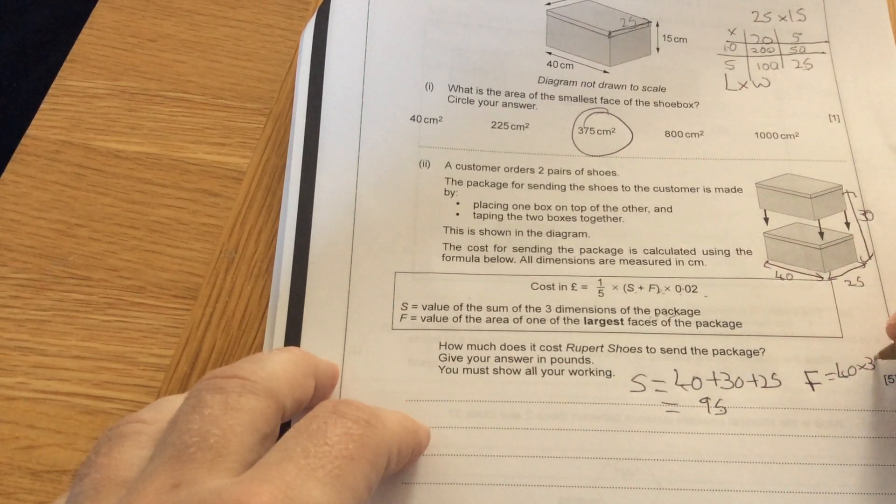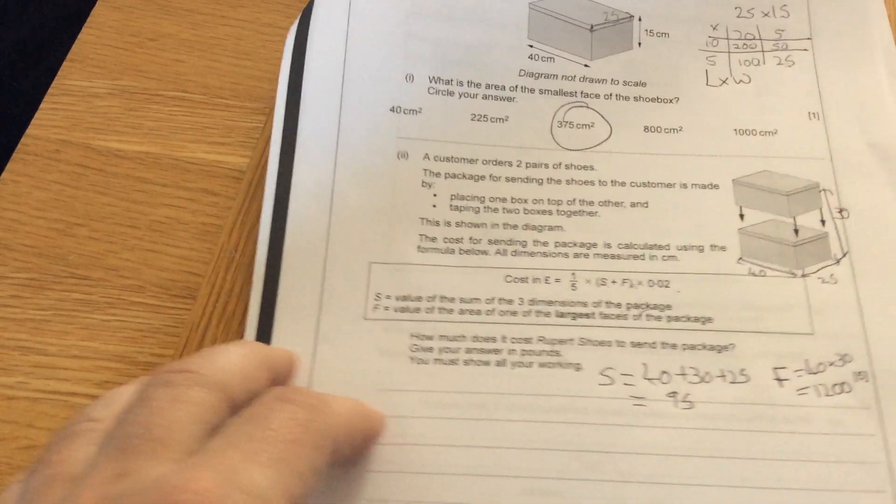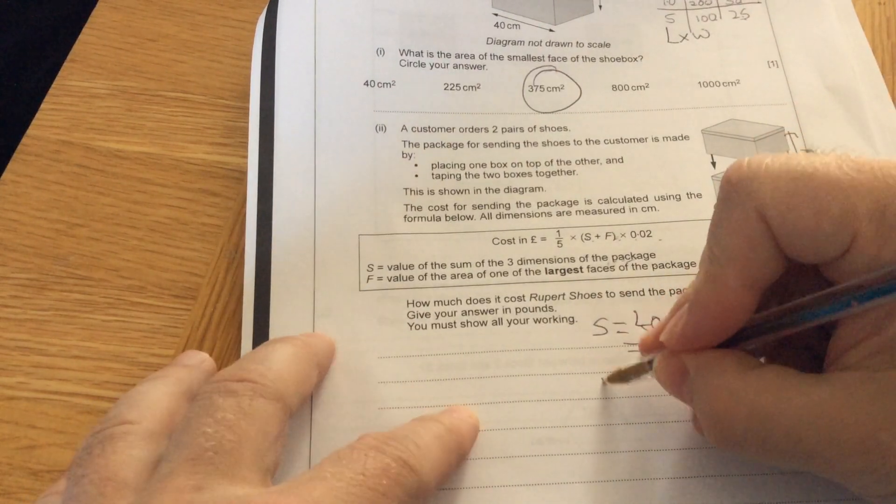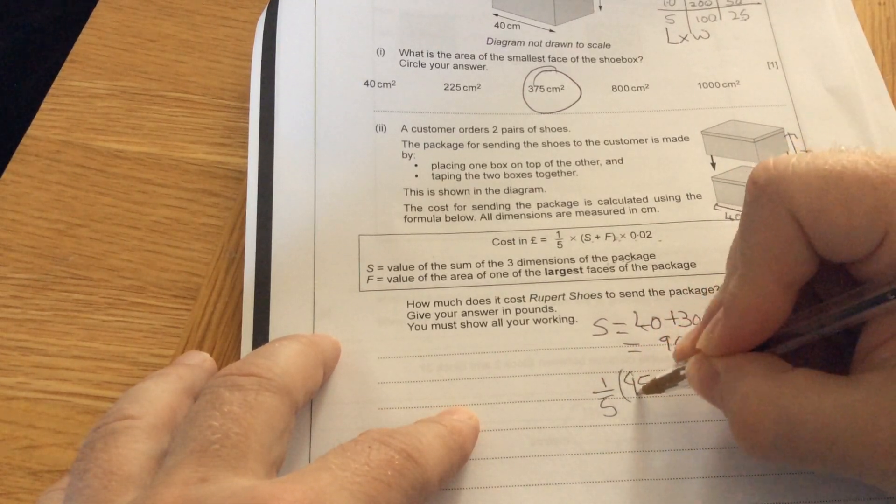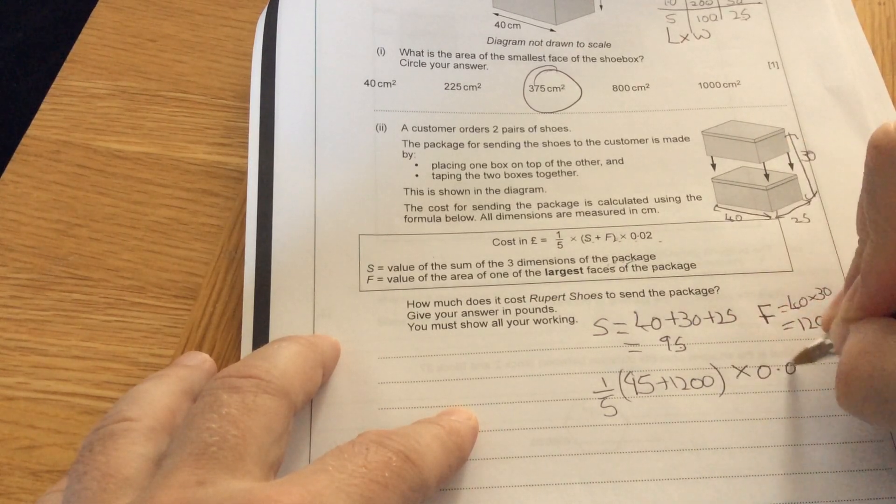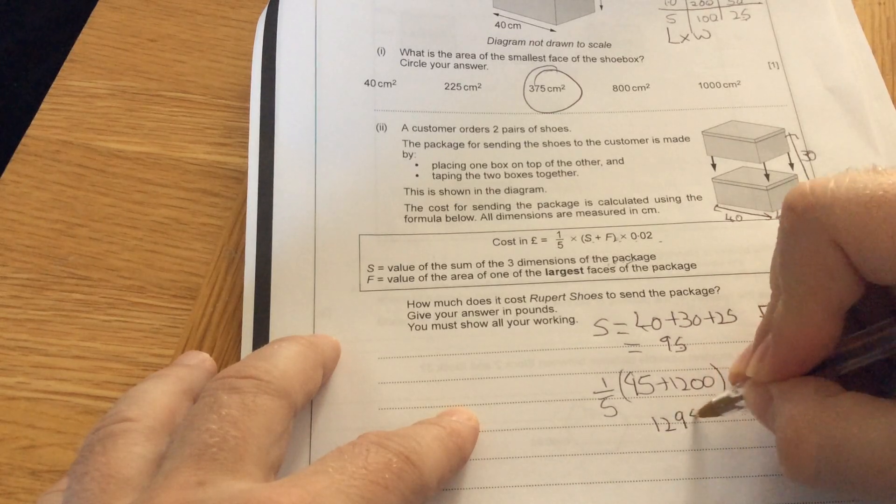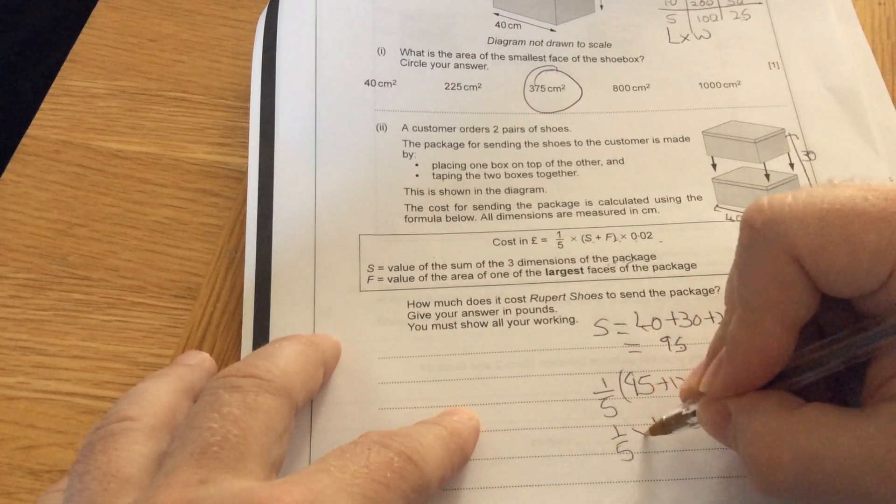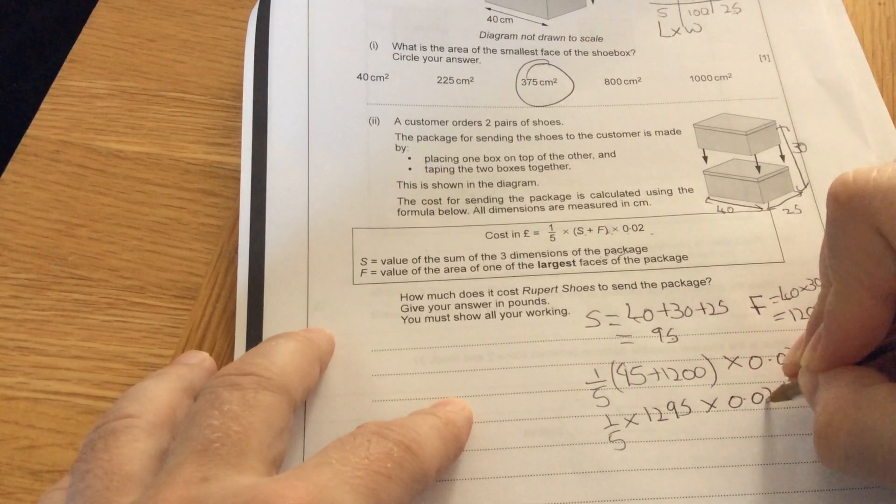40 times 30: four threes are 12, and you've got two zeros, so it's 1,200. Using that formula, it's a fifth of 95 plus 1,200 times 0.02. So 95 plus 1,200 is 1,295. It's a fifth times 1,295 times 0.02.